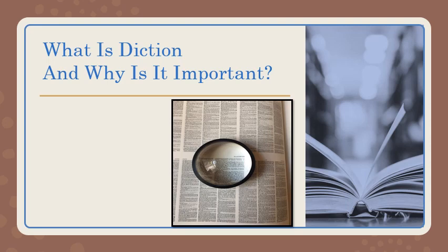We need to start out with what diction is, because if I'm going to say that purposeful diction is important to creating characters — and it's not just important to creating characters, this diction thing is important all over the place — we need to first know what diction is. I personally think it's easiest to remember by looking at that word and knowing that diction has the same root as dictionary, and what is a dictionary? It's a book full of words. So diction is something to do with words. The definition: diction in somebody's writing is the author's choice of words.